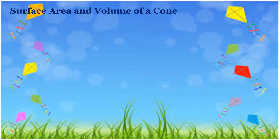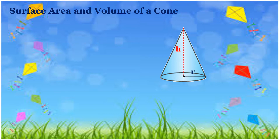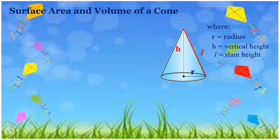Now let us derive the surface area and volume of a cone. Supposing we have this cone. This is R, this is H, and this is L. R stands for radius, H for the vertical height, and L for the slant height. To get the slant height, we will be having L squared is equal to R squared plus H squared. It is based on the Pythagorean theorem.